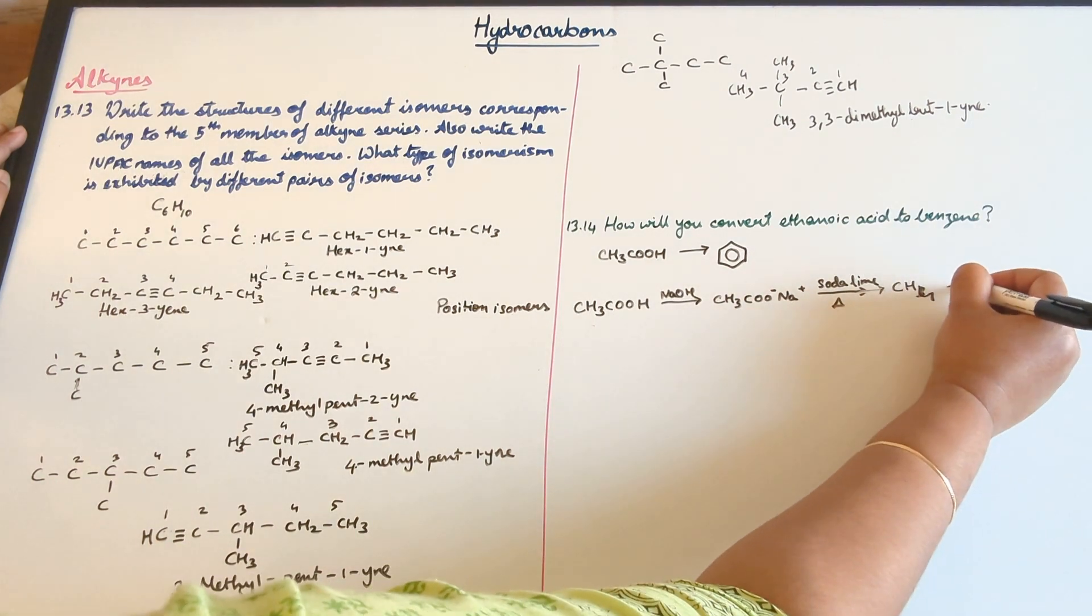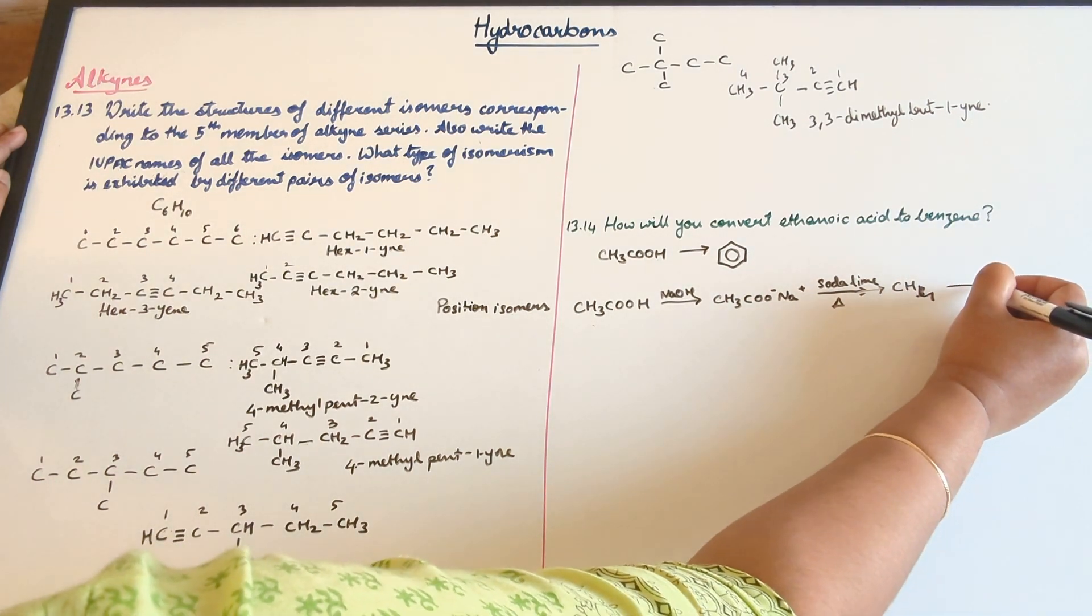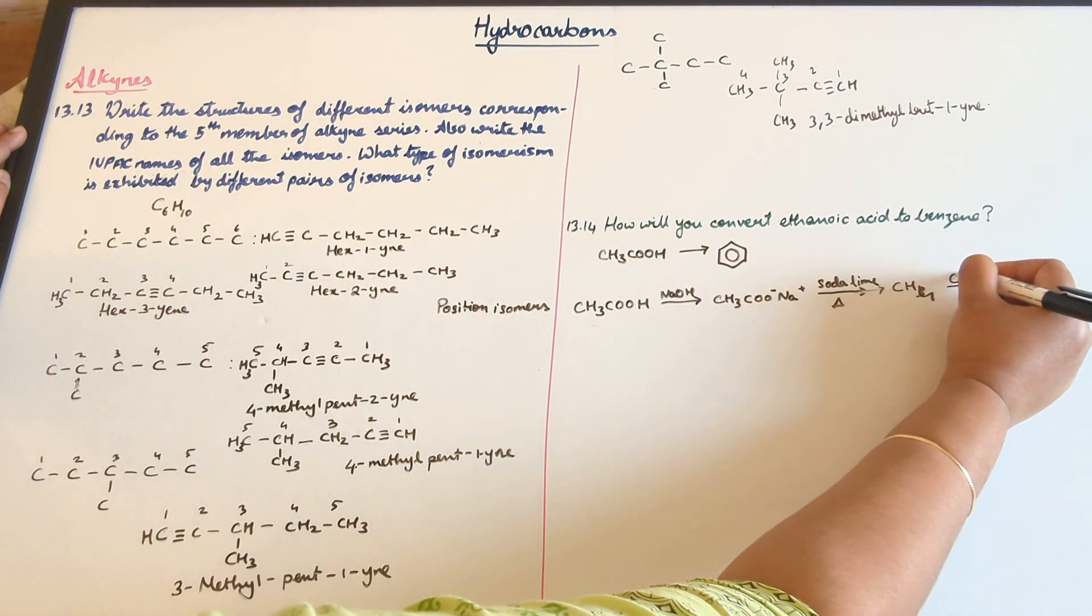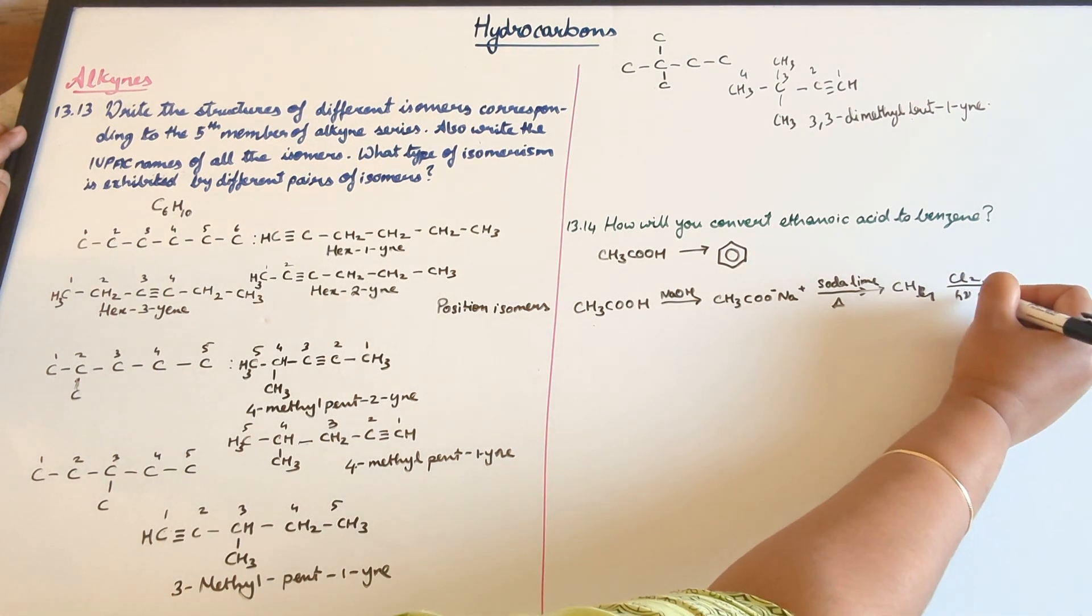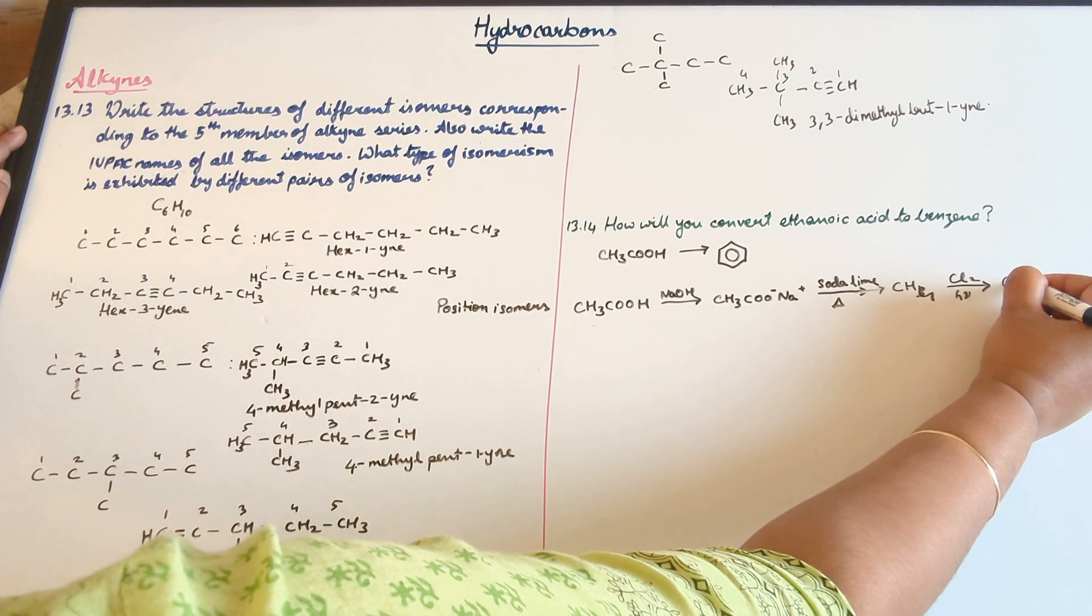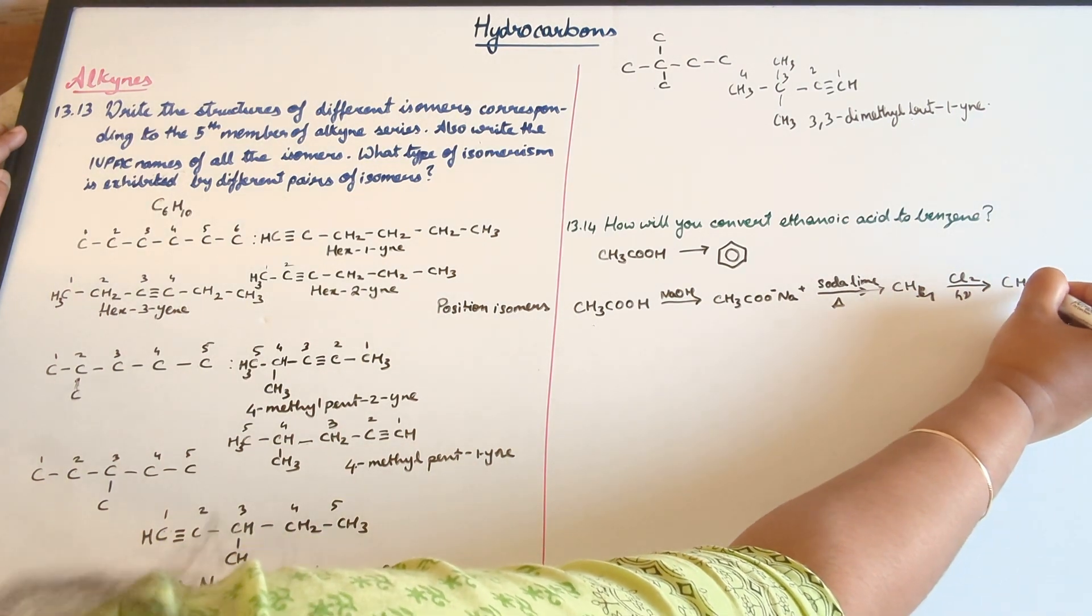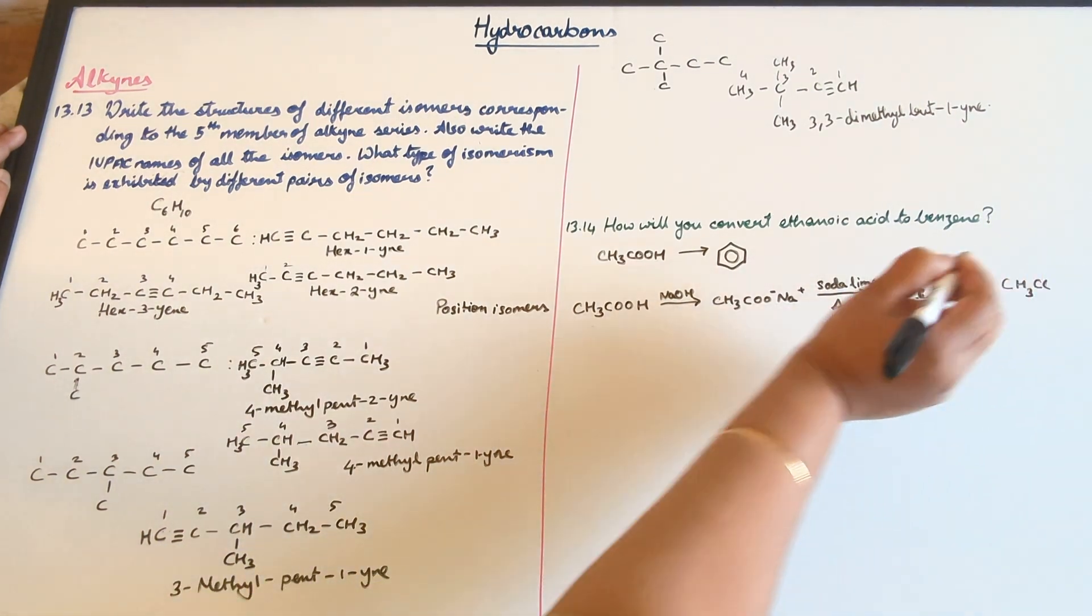Now methane is going to react with chlorine and Hν basically underwent a substitution reaction to form CH3Cl.